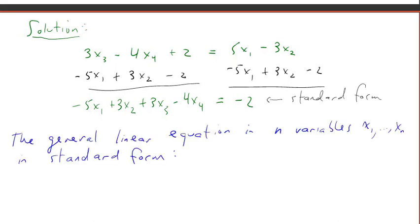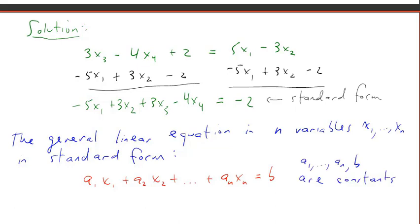Symbolically, we can write the general linear equation in n variables, x1 down to xn, in standard form as follows: a1·x1 plus a2·x2 all the way down to an·xn is equal to b, where the a's and b are constants.